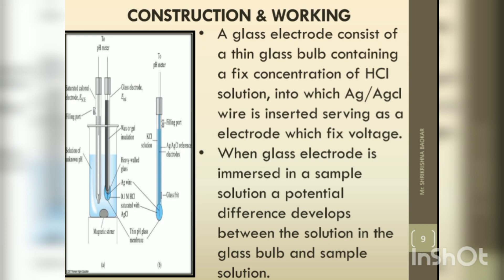In a typical setup, a glass electrode and a reference electrode are placed in a sample solution, connected to a voltmeter, forming a pH meter. The glass electrode consists of a thin glass bulb containing a fixed concentration of HCl solution into which an Ag-AgCl wire is inserted, serving as an electrode with a fixed voltage.